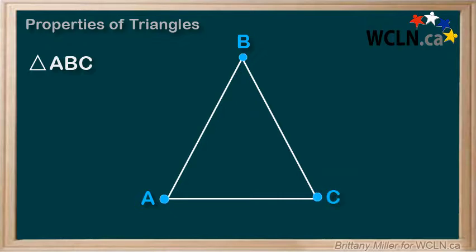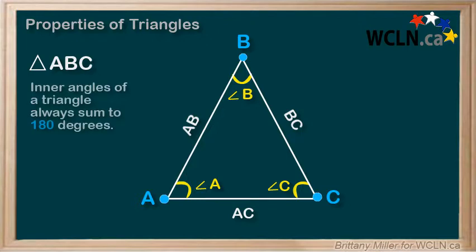We can refer to the angles as angle A, angle B, and angle C. The sides would be AB, BC, and AC, named after the points that they connect. In a triangle, the sum of the inner angles is always 180 degrees. That means if we add angle A plus angle B plus angle C, we will get 180.